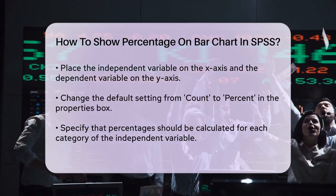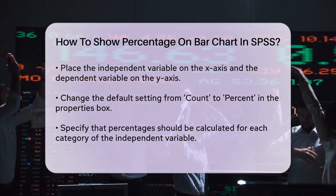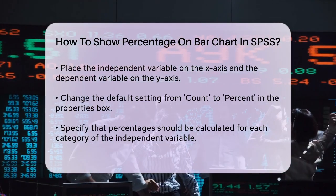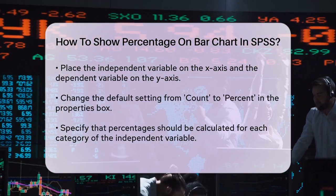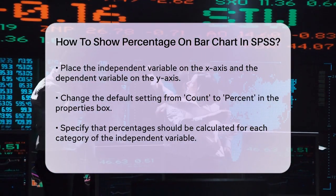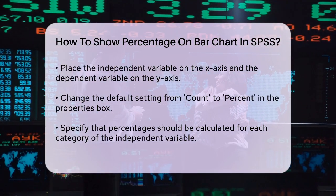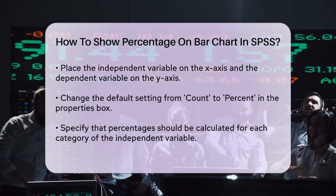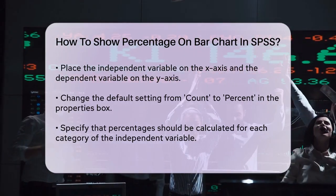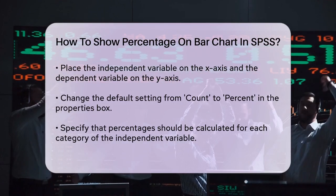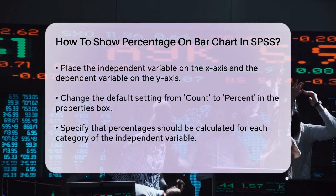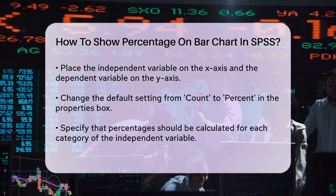To set this up in SPSS, go to the chart builder, select the stacked bar chart option, and make sure your independent variable is on the x-axis. Then, go to the properties box and change the default from count to percent. Specify that you want the percentages to be based on the total for each x-axis category. This will give you a clear visual of how each category contributes to the whole.